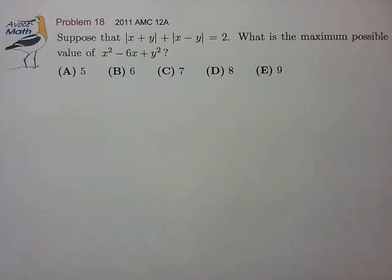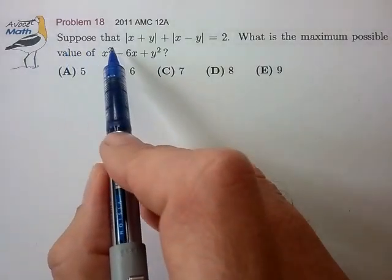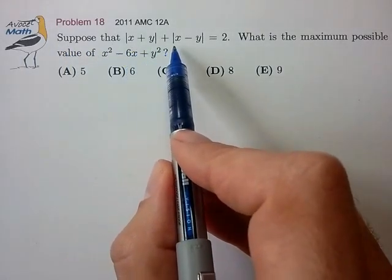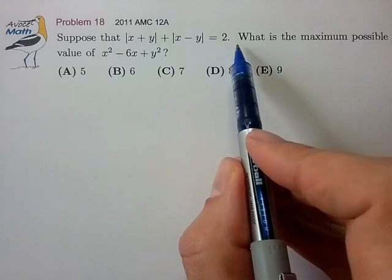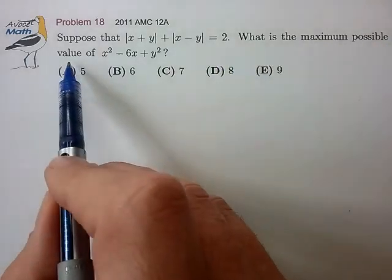Hi, this is an example absolute value problem from the AMC, so let's see what we have. Suppose that |x+y| + |x-y| = 2. What is the maximum possible value of x² - 6x + y²?